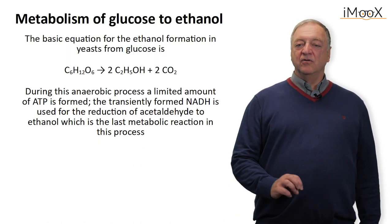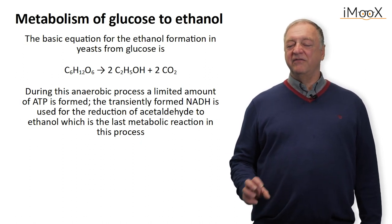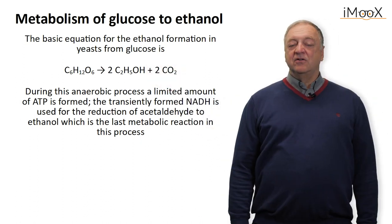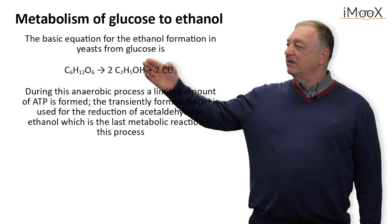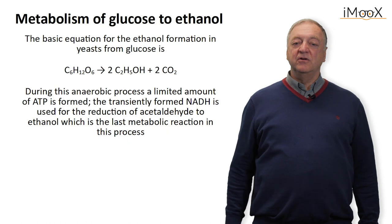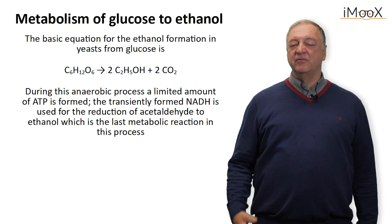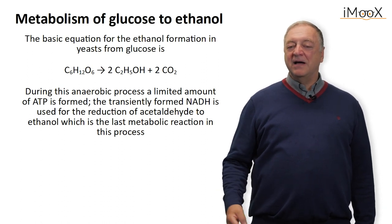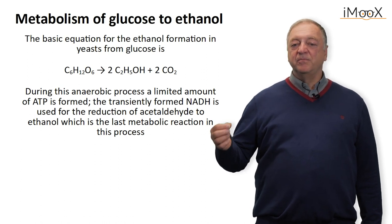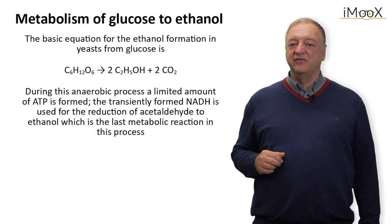To convert glucose, or disaccharides, into ethanol we have a very basic reaction equation. During alcoholic fermentation, two molecules of ethanol are produced from one molecule of glucose plus two molecules of carbon dioxide. A limited amount of energy is formed as ATP and NADH, but NADH is further used to reduce acetaldehyde to ethanol, which is the main product of this process.